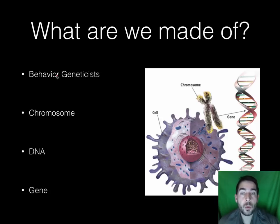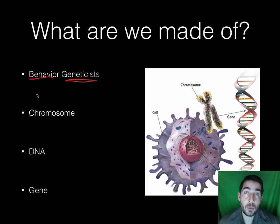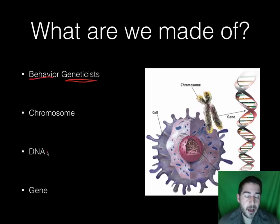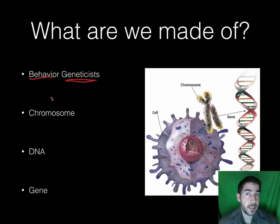Number one: what are we made of? People who want to look at what we're made of are called behavior geneticists. They get the word 'geneticists' from the word 'gene.' These are people that want to look at how what we're made up of affects our behavior. Behavior geneticists also want to look at more specifically the power and the limits of genetics and your environment on behavior — how these things affect and influence your behavior.